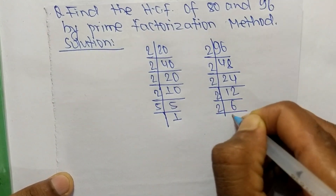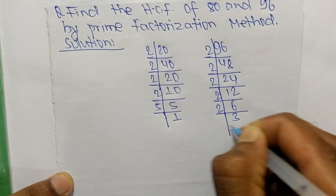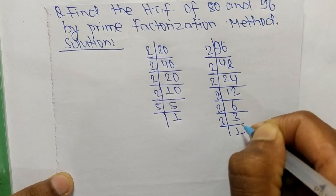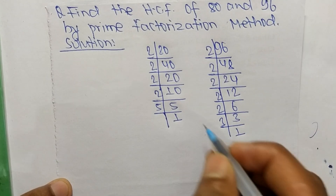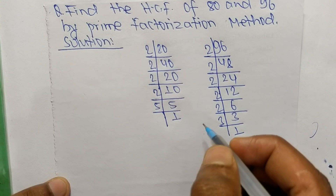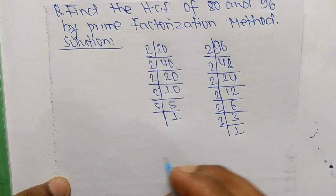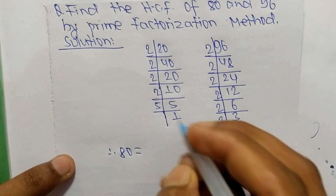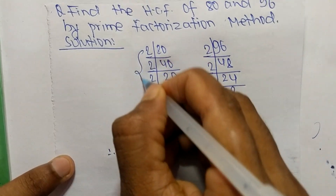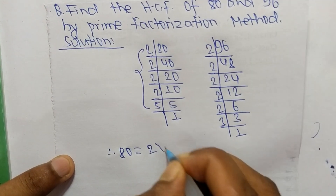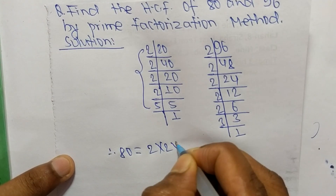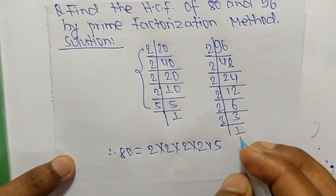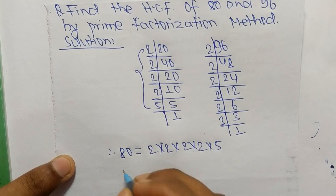Then 2 times 3 equals 6, and 3 times 1 equals 3. So from these prime factors we can write: 80 is equal to 2 times 2 times 2 times 2 times 5.